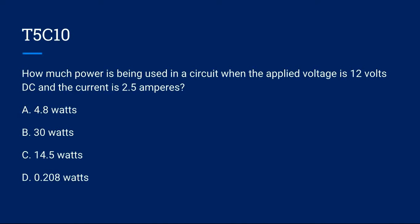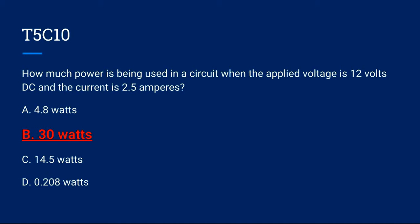T5C10: How much power is being used in a circuit when the applied voltage is 12 volts DC and the current is 2.5 amperes? A. 4.5 watts, B. 30 watts, C. 14.5 watts, or D. 0.208 watts. Correct answer is B. 30 watts.